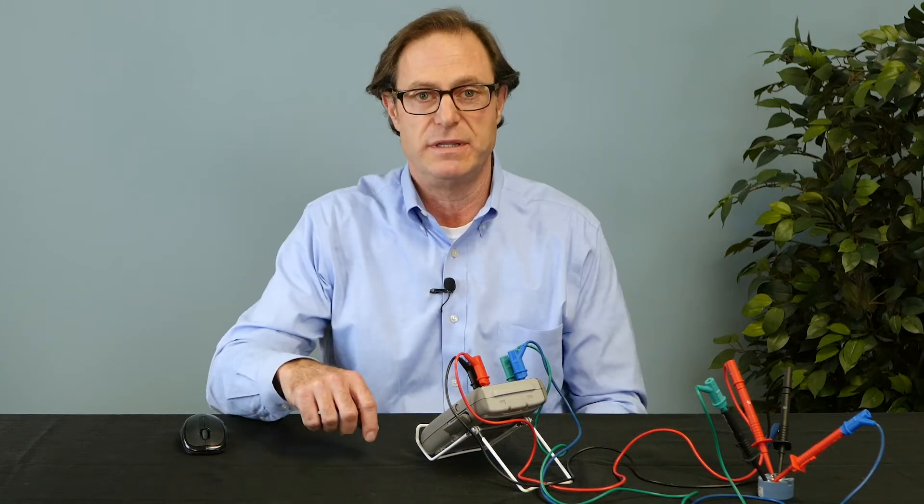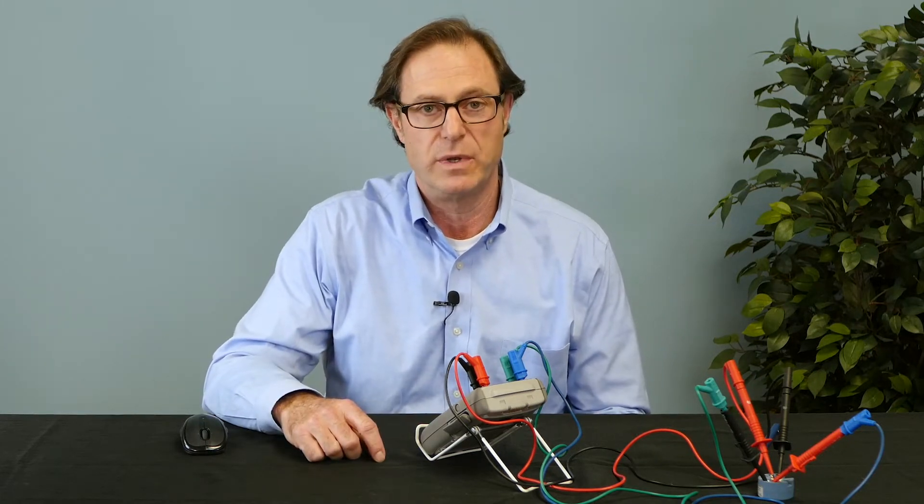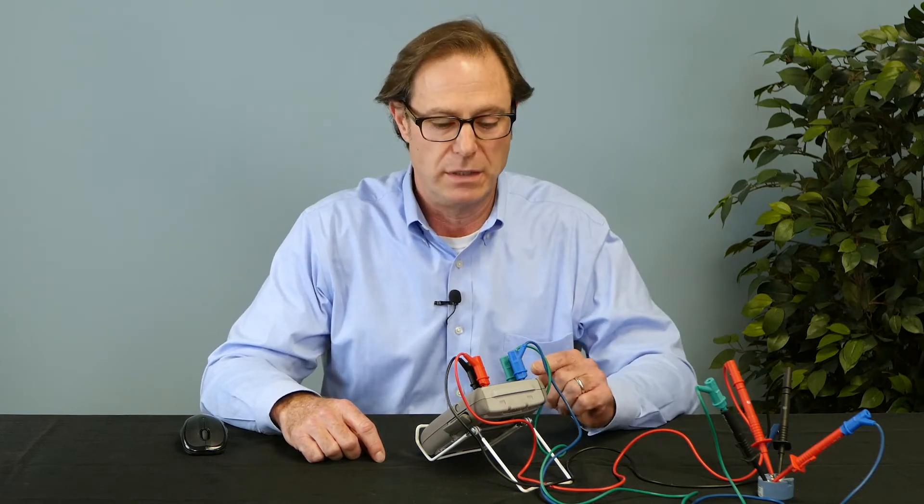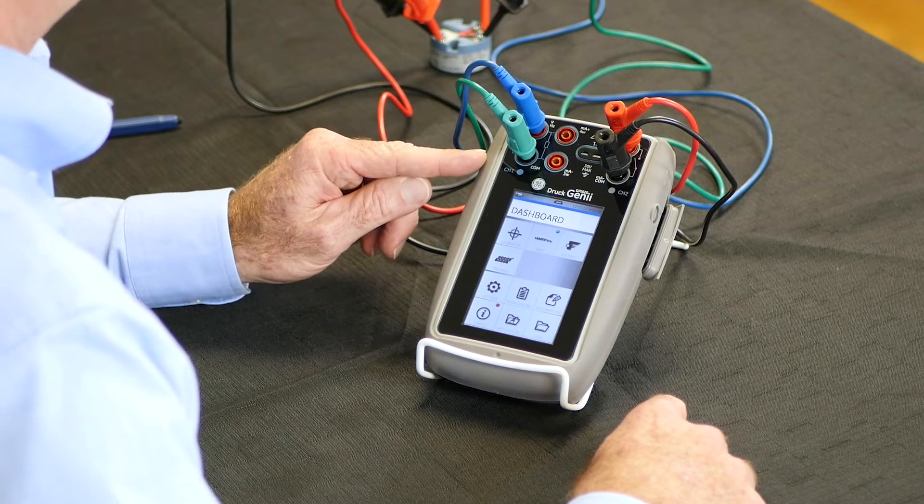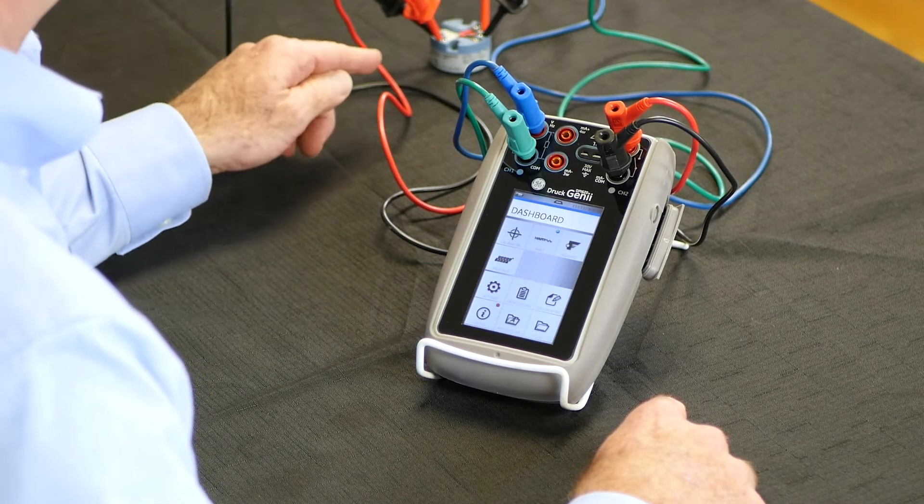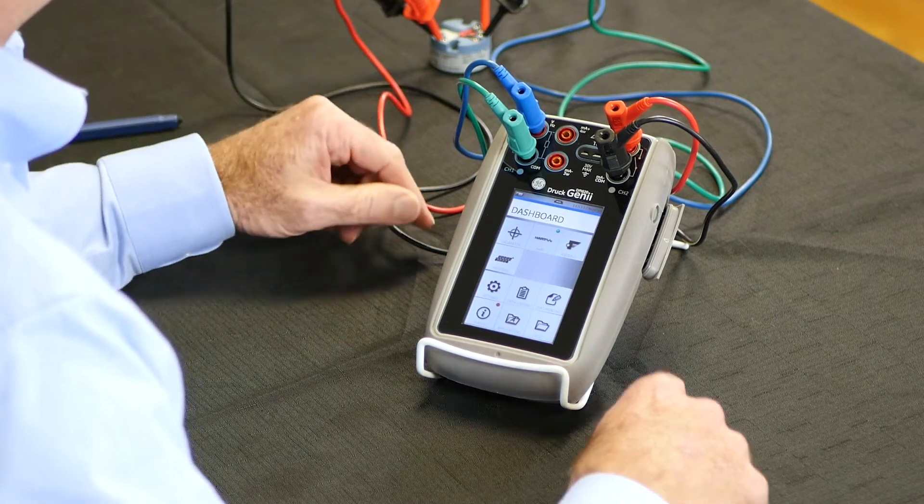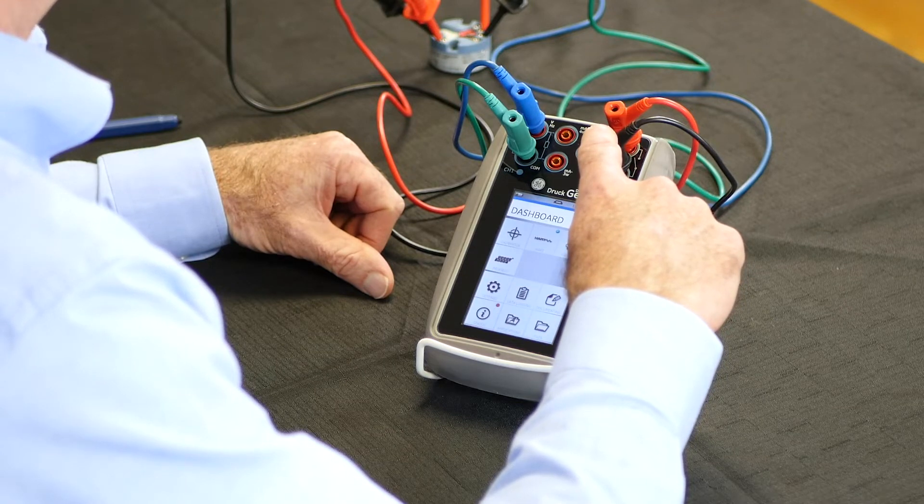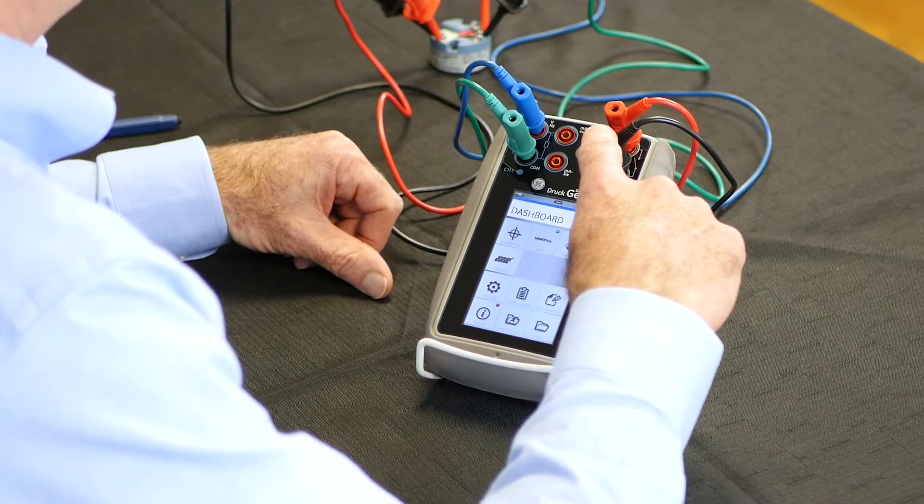To demonstrate the HART communicator, we have a temperature transmitter connected to the DPI 620. On channel one, we're simulating a zero to 100 degrees C RTD signal to the transmitter. And on channel two, we're providing a 24 volt excitation and measuring the four to 20 milliamp output off of the transmitter.